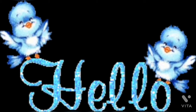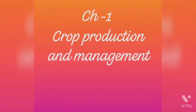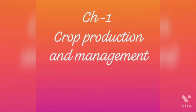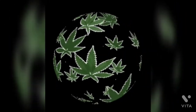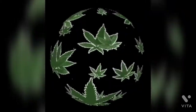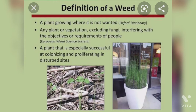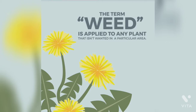Hello children. Till now we had completed four major steps of farming. Now we will study about the remaining steps which are required to grow a good crop. The fifth step is crop protection — the protection it requires from weeds. What is a weed? The unwanted plants which grow along with the cultivated crop in a field are called weeds.